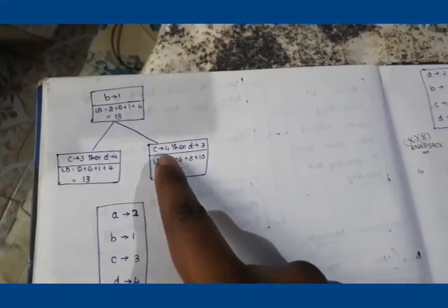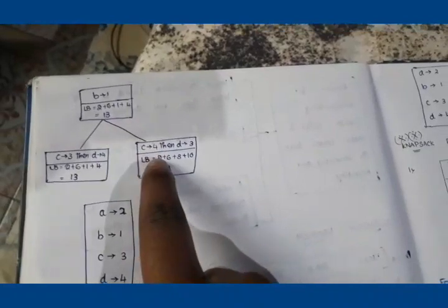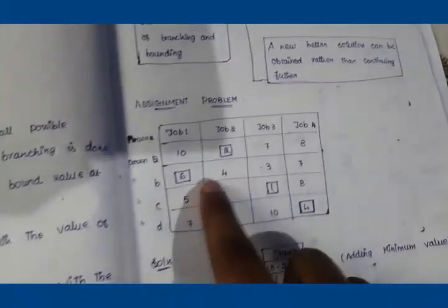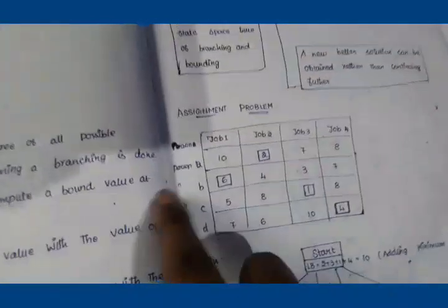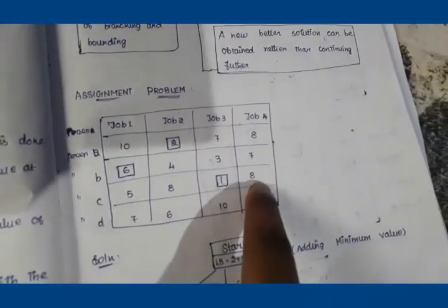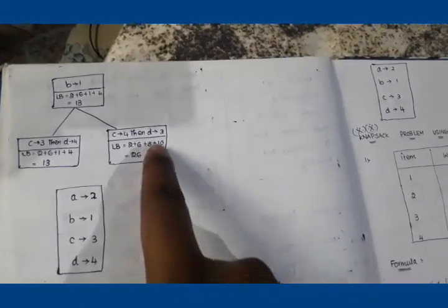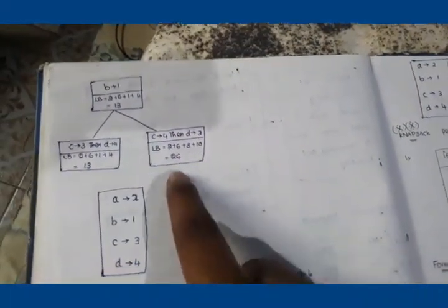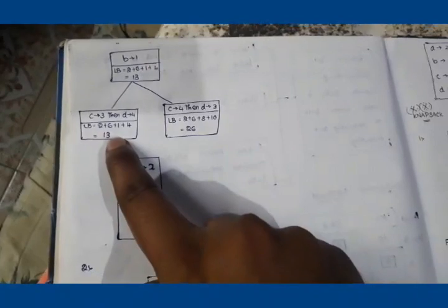For C=Job 4 and D=Job 3: A is assigned to Job 2 (cost 2), B is assigned to Job 1 (cost 6), C is assigned to Job 4 (cost 8), and D is assigned to Job 3 (cost 10). Total = 2 + 6 + 8 + 10 = 26.